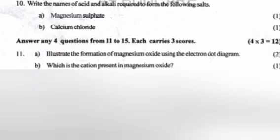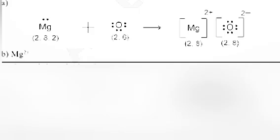Question 11A: Illustrate the formation of magnesium oxide using the electron dot diagram. B. Which is the cation present in magnesium oxide? Answer: B. Magnesium 2+.